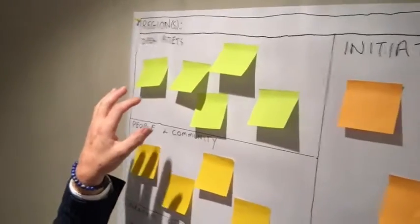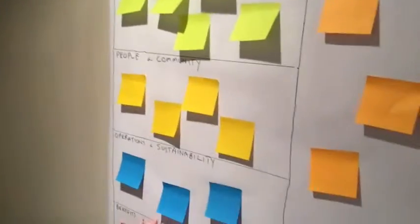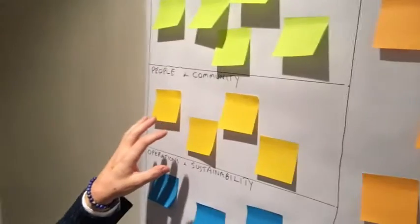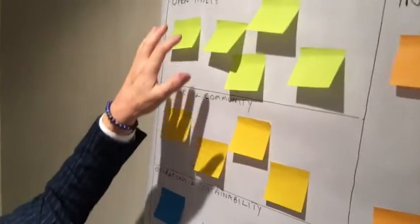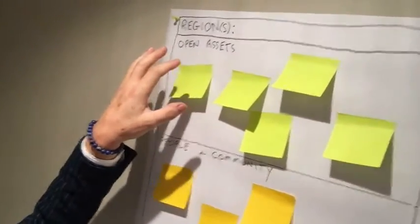And again, it's similar to Day 1 in that we start with what is it that we have to start with? What is it we can use as the basis for a collaboration? What assets do we have? So the color coding is similar to Day 1.